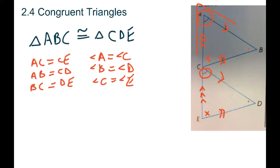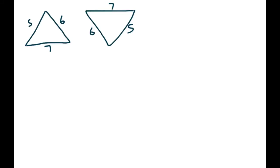With congruence, if everything is the same on the triangle — all sides, all angles — the triangles have to be the same. The question is: do we need all three sides and all three angles given to us to prove they're congruent? The answer is no. We only need certain parts. There are three cases that show triangles are congruent, and we'll go through each one.